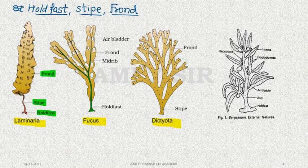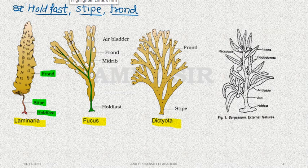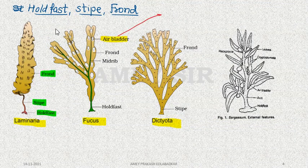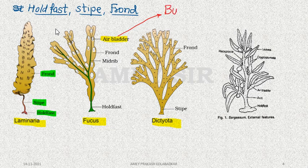When we talk about Fucus, it has the presence of a Frond as its body. The Frond can divide to become 2 or 3 branches, going further into the presence of Frond.